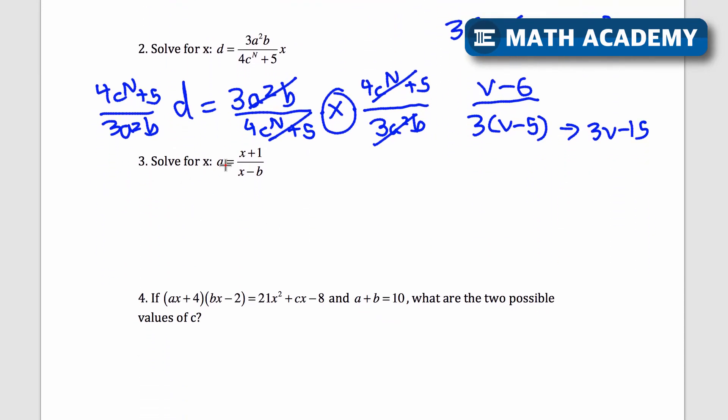Number 3. Another solve for x. a equals x plus 1 over x minus b. There's an x plus something in the top and an x minus something in the bottom. Now, in this case, we need to get x by itself. And it looks a little bit tricky, but what we can do is, I'll write out the steps here. The first thing I'm going to do is I want all my x's in the numerator. I don't want an x in the top and the bottom. So what I'll do is multiply by x minus b on both sides.